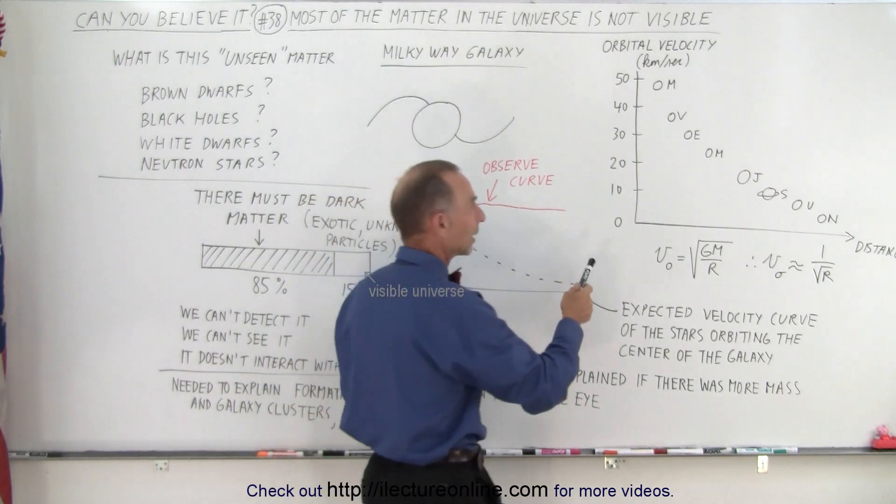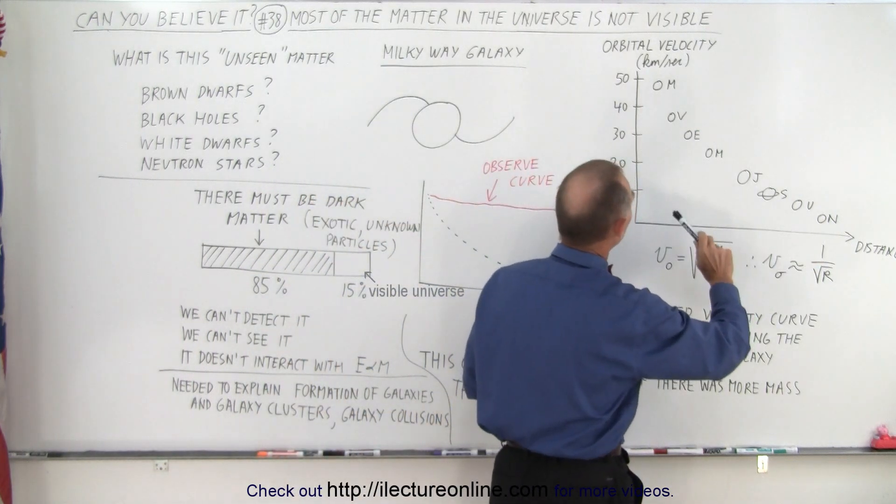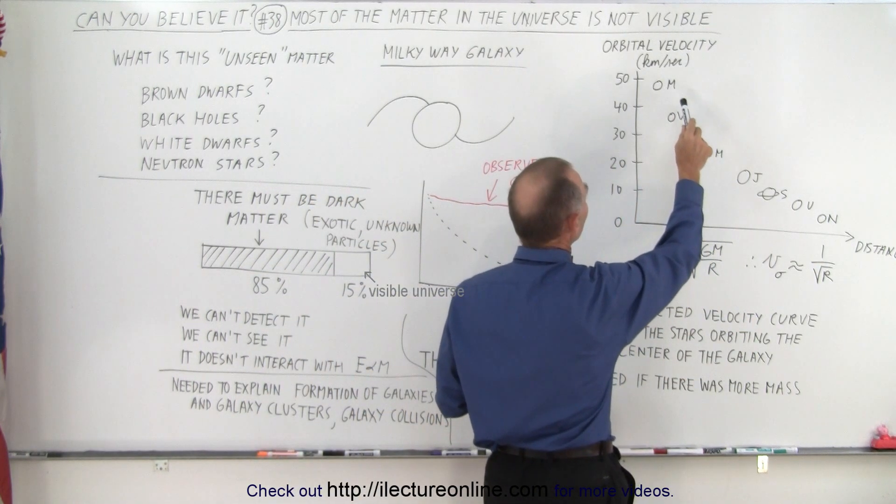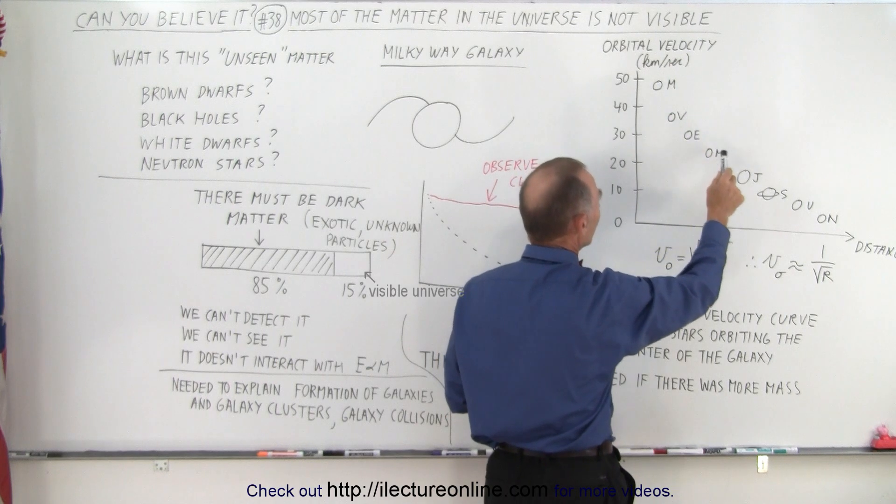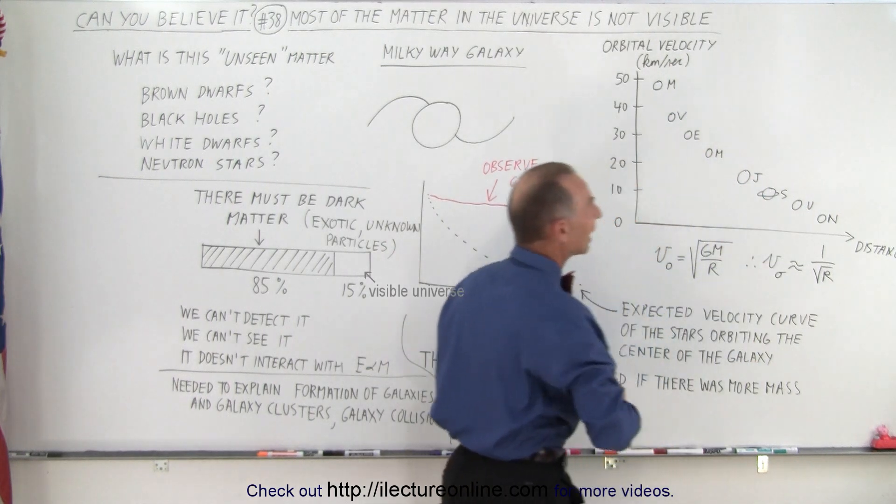For example, here the nine planets, or I should say eight planets, I didn't put Pluto on there, but here's Mercury, Venus, Earth, Mars, Jupiter, Saturn, Uranus, and Neptune.